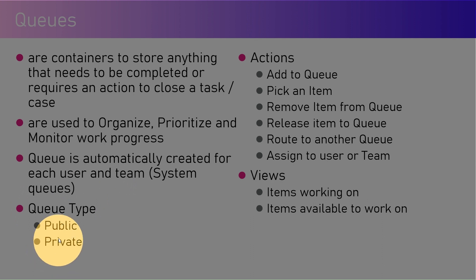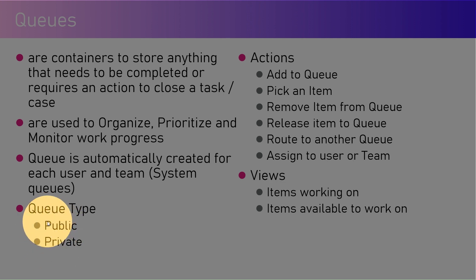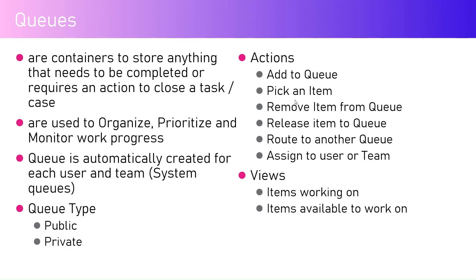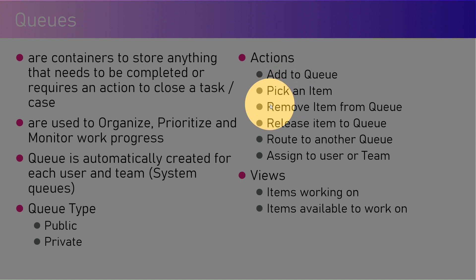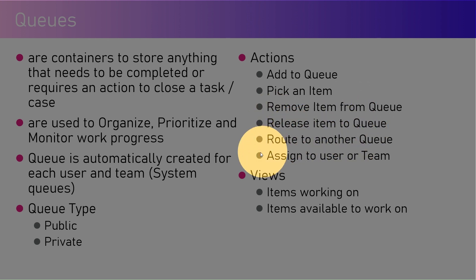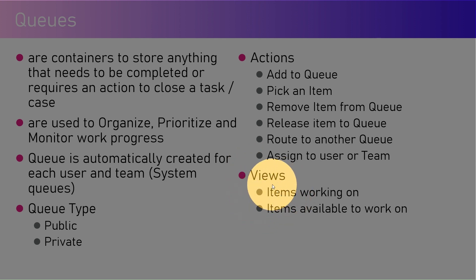There can be two types of queues: public and private. Private queues are confined to a set of members, while public queues have no such restrictions. The different actions you can perform are: add an item to the queue, pick an item from the queue to work on, remove an item from the queue, release the item back to the queue, route to another queue, or assign to a user or a team. You can also monitor queues through views such as items I'm working on and items available to work on.